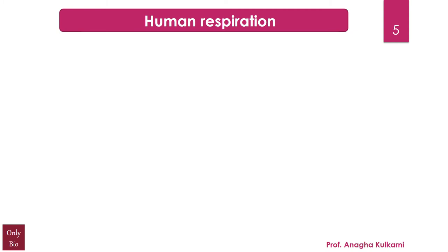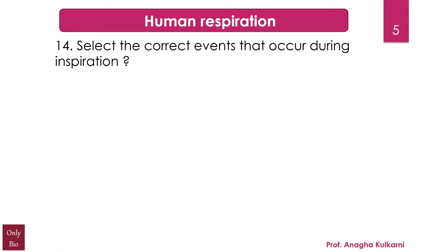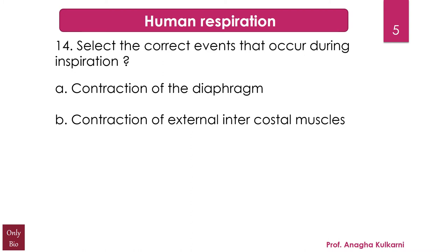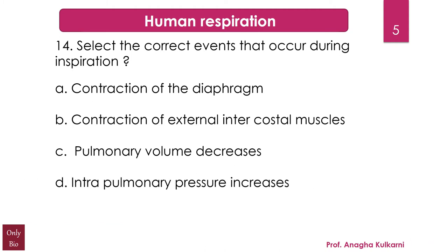The next question relates with human respiration: select the correct events that occur during inspiration. A) contraction of the diaphragm, B) contraction of external intercostal muscles, C) pulmonary volume decreases, D) intra-pulmonary pressure increases. The correct answer is A and B. During inspiration, the diaphragm contracts and pulls downward; the intercostal muscles contract and pull upward, increasing the size of the thoracic cavity and decreasing internal pressure, causing air to rush in and fill the lungs.